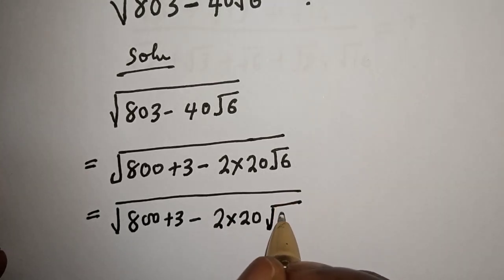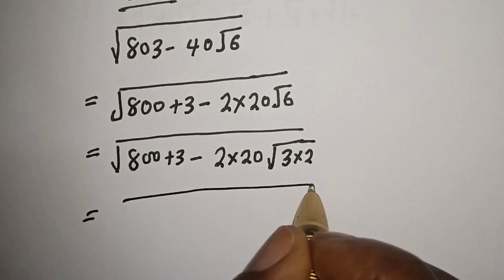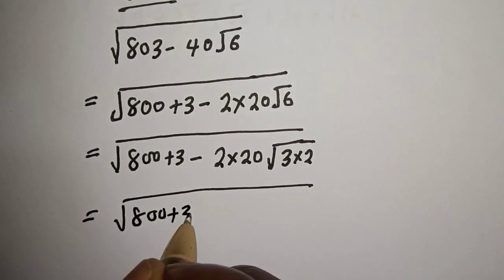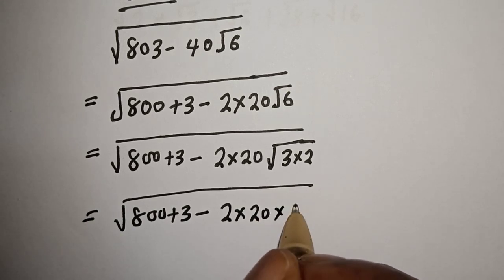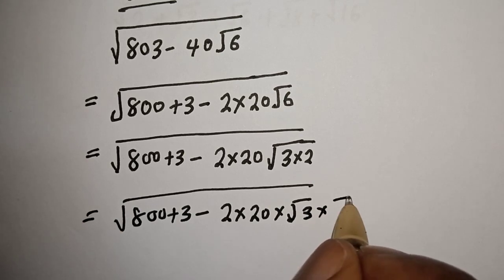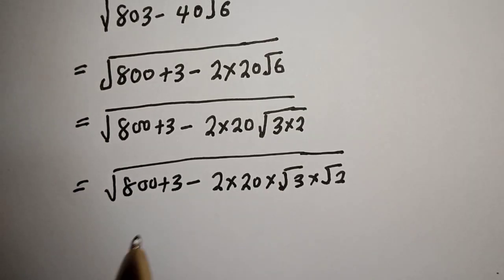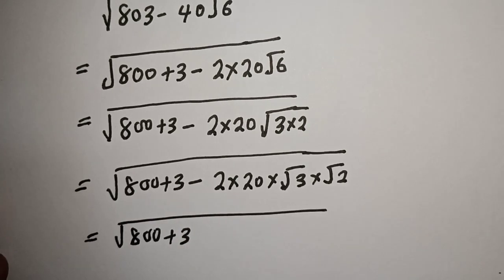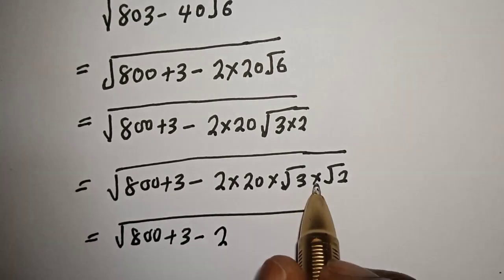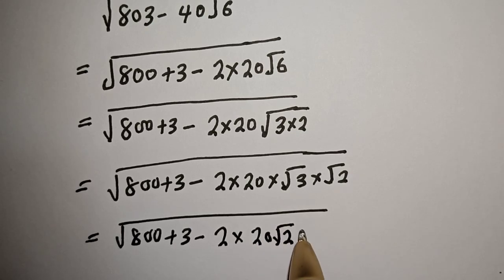Root 6 can be written as root 3 multiplied by root 2. So this becomes square root of 800 plus 3 minus 2 multiplied by 20 root 2 multiplied by root 3.